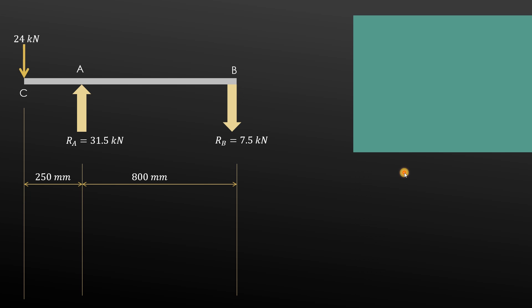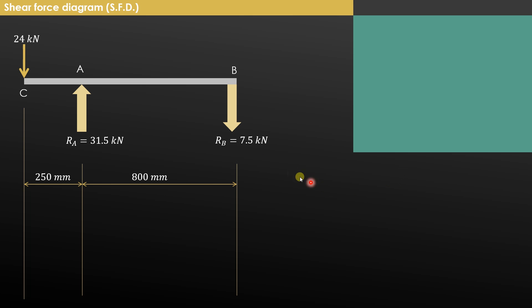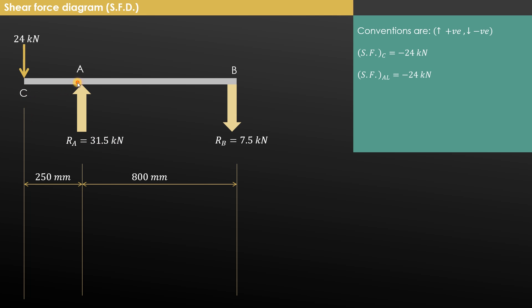The next step is to draw the shear force diagram. Since Rb was negative, its direction has been corrected to downward in the updated diagram. We start with point C. The convention used is that upward forces are positive and downward forces are negative. Shear force at C equals minus 24 kN as it acts downward. Just left of A, the shear force is the same — minus 24 kN — since no force acts between C and just left of A.